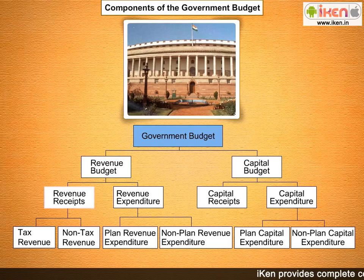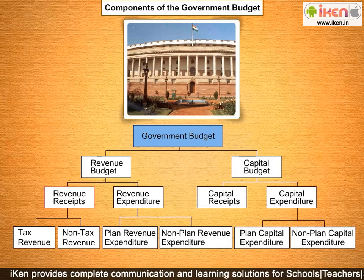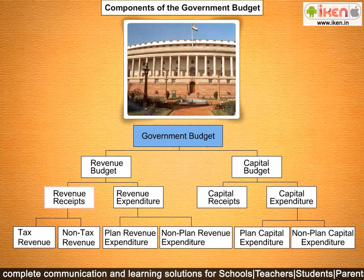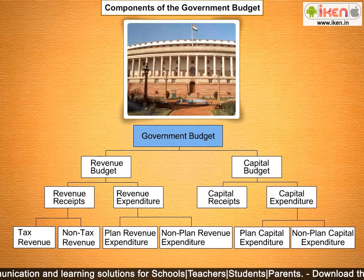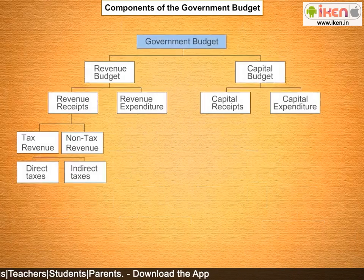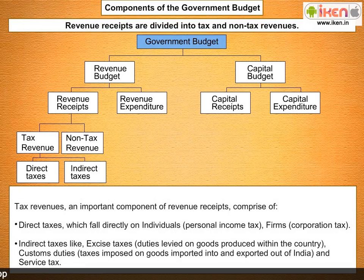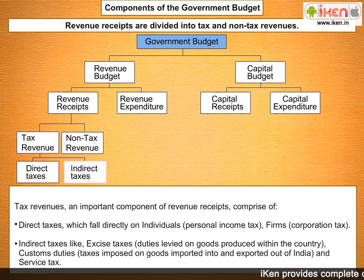Revenue receipts are the incomes received by the government from all sources in its ordinary course of governance. These receipts do not create a liability or result in a reduction of assets. Revenue receipts are further classified as tax revenue and non-tax revenue. Tax revenues consist of proceeds of taxes and other duties levied by the central government, and comprise direct taxes and indirect taxes.